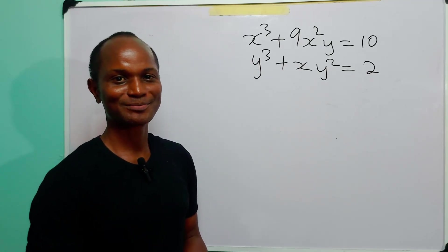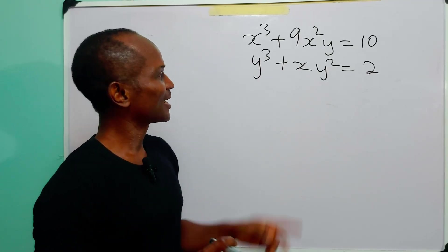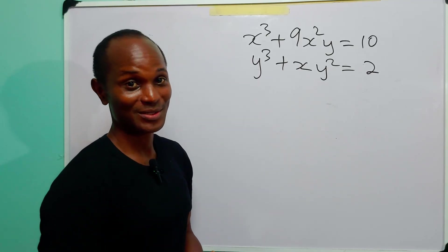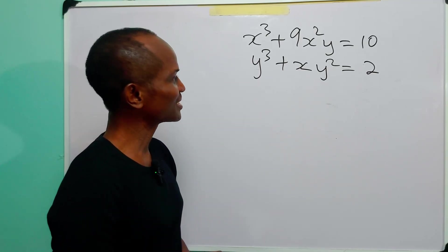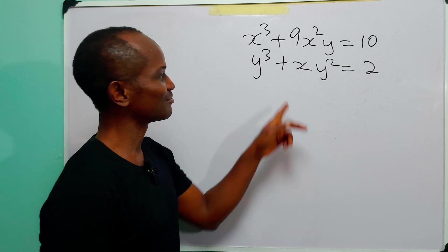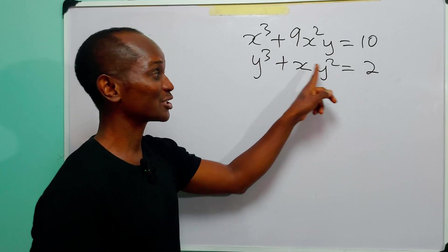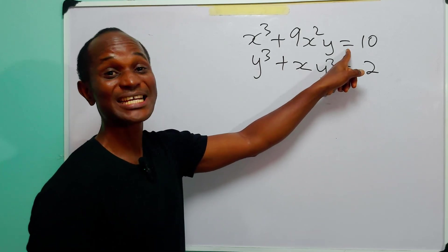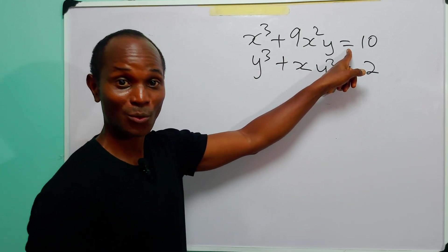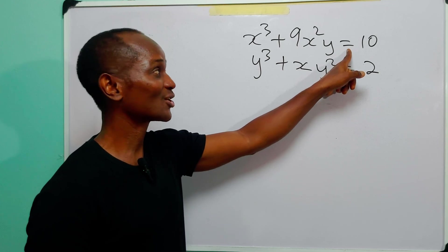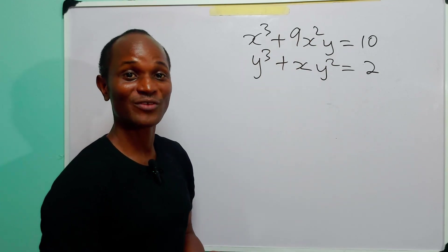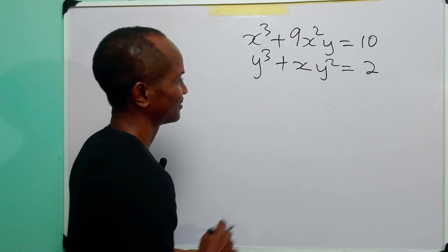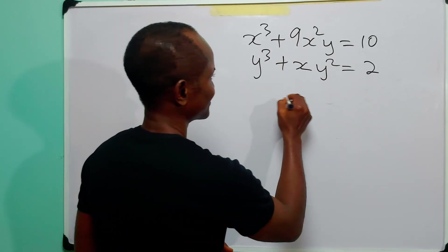Hello and welcome. When I first saw the system of equations on the board, my first instinct was to make x the subject of equation 2, substitute into equation 1, and then solve the resulting equation for values of y.